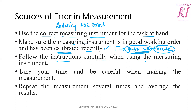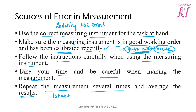We can reduce errors by following the instructions carefully when using measuring instruments, taking time and being careful when making measurements, and repeating the measurement several times and taking the average. For example, measure 10 times, add the results, and divide by 10.